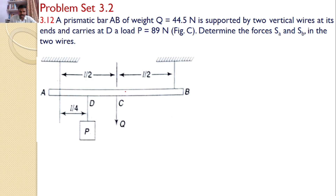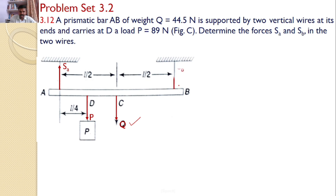Let us consider the various forces acting on the prismatic bar AB. The first one is the self-weight Q. The second one is the load P. And then the reaction force SA and the reaction force SB along the wire, directed towards the fixed support.